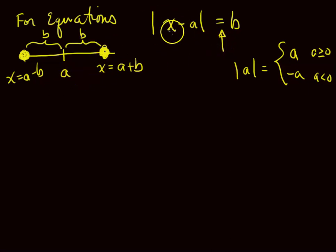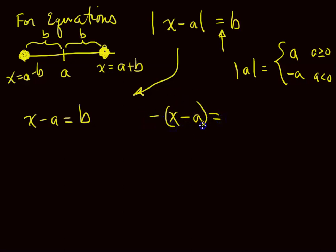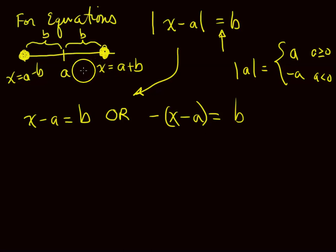So how do you solve this? You split it into the two pieces that the definition gives you. Either X minus A equals B — that's using the first part — or the opposite of X minus A equals B. So you get X minus A or the opposite of X minus A, and the conjunction you always use for equals is OR. It can't be both places at the same time, so it's either the one on the left or the one on the right.